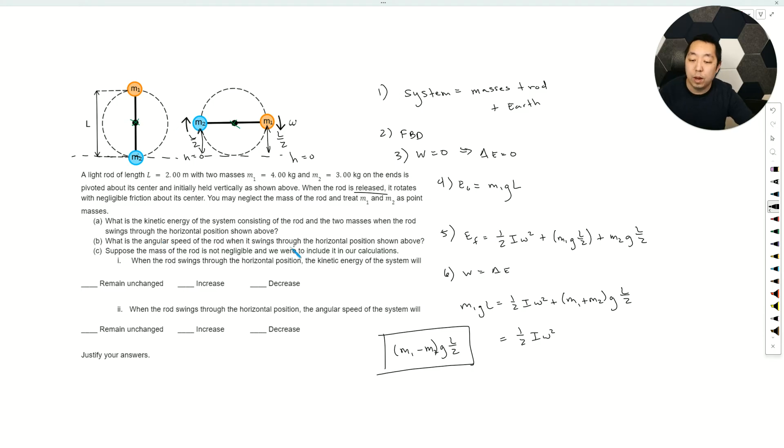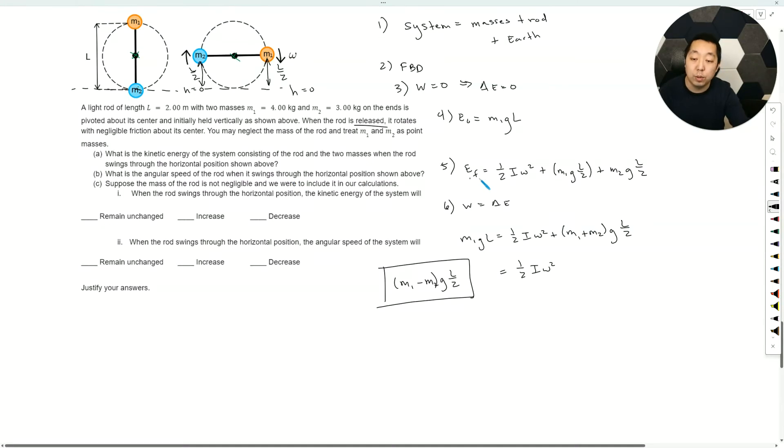What is the angular speed of the rod when it swings to the horizontal position? We're going to solve for omega. The I refers to the entire rotational inertia of the system, so you're going to do MR squared of every object for the point masses. It's M1 times L over 2—the distance from there to there—squared. It's always distance to the axis of rotation, L over 2 squared.